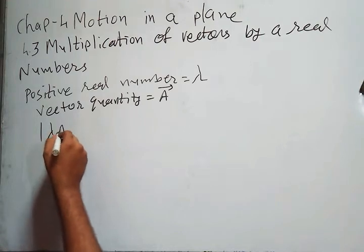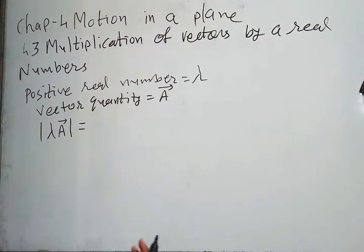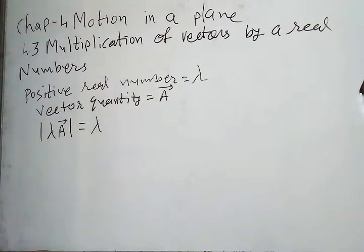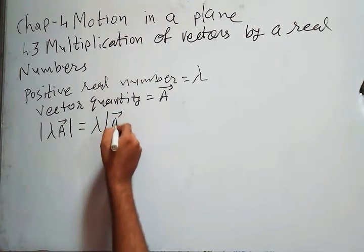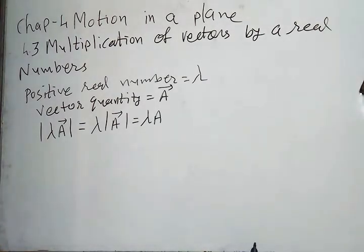We know that lambda is a positive real number, so it will be getting outside. Now we are left with only modulus of vector A, and the answer will be lambda into A. So the whole term now becomes a scalar quantity because of taking modulus.